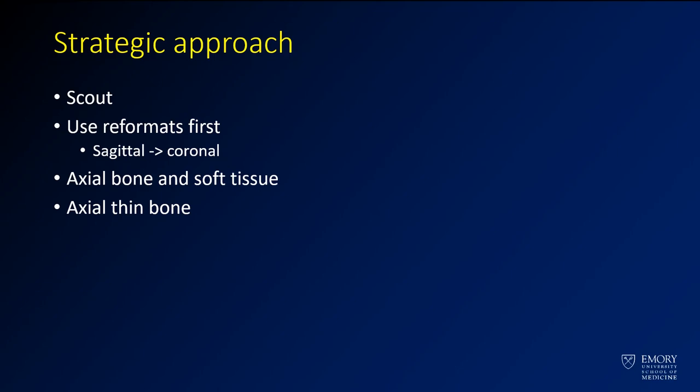When you open a CT of the cervical spine you can take a strategic approach. You can first look at the scalp, which can give you a little bit of information about the alignment, and then I recommend using your reformats first. In the modern era you typically have sagittal and coronal reformats. That tells you a lot about the alignment and you're going to know a lot about the study before you even move on to your axial images. Then you'll have axial bone and soft tissue images, and thin bone images at the very end as a troubleshooting measure.